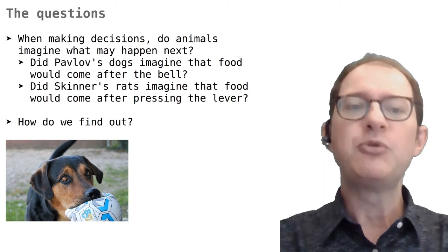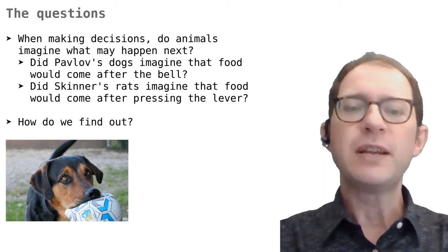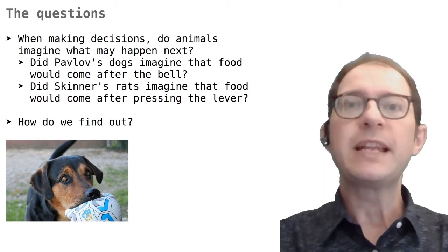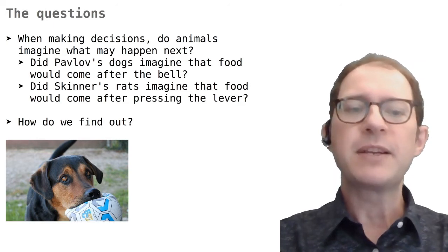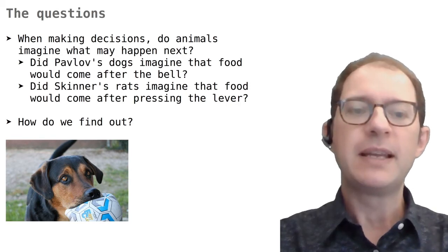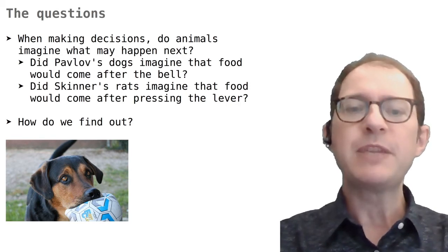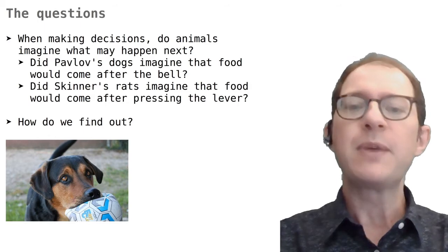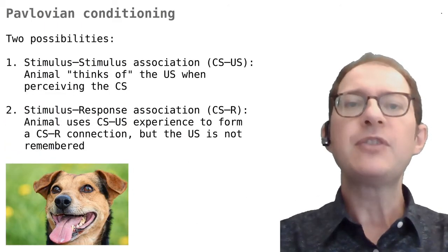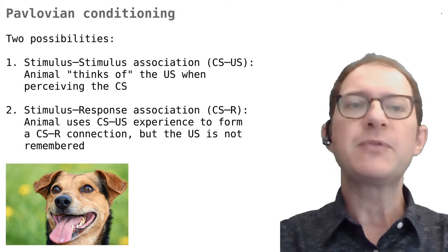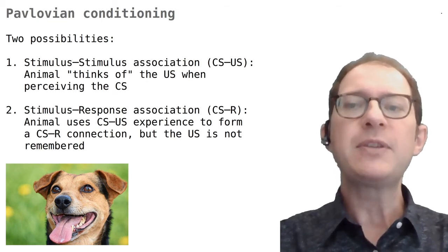Psychologists ask the question of whether animals imagine the future using experiments on Pavlovian and instrumental conditioning. For example, Pavlov could ask whether his dogs imagined the food when they got excited at the sound of the bell, and Skinner could ask whether his pigeons were thinking about the food when they were deciding whether to peck or not. Psychologists also frame the question in terms of what associations are formed during learning. Let's see how this works in Pavlovian conditioning first.